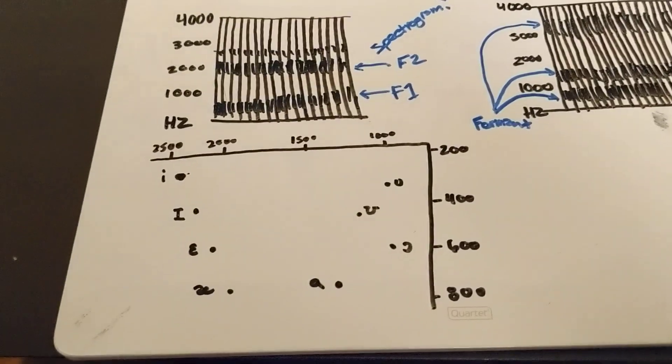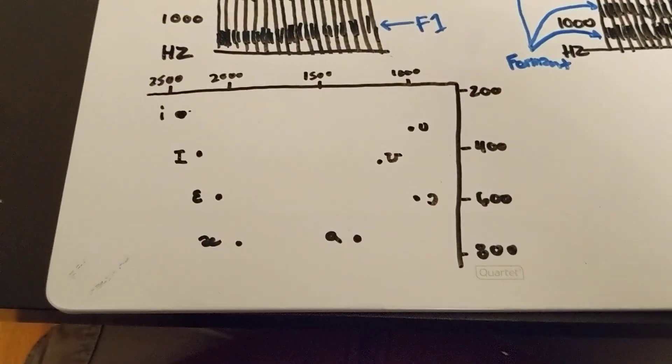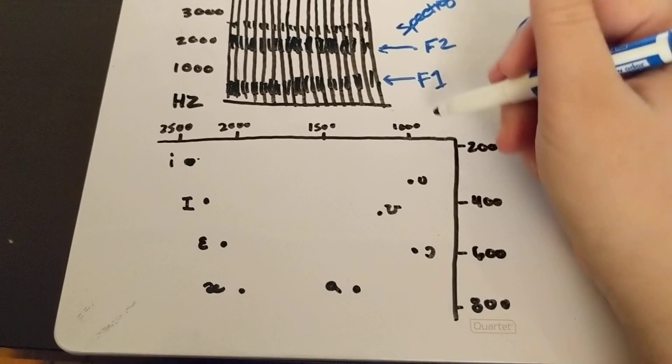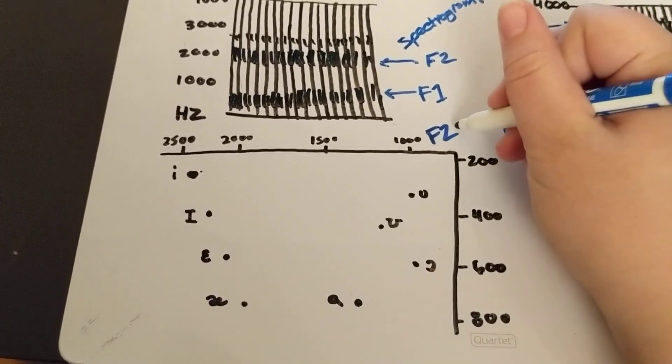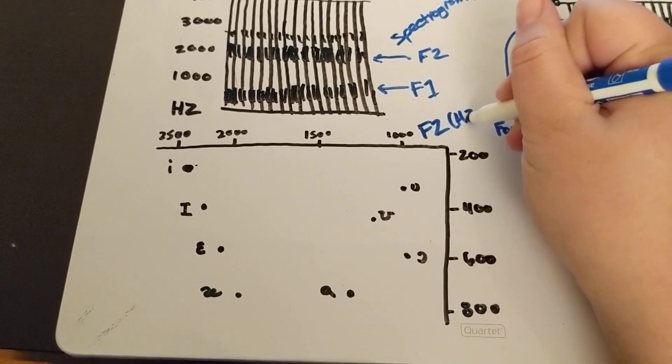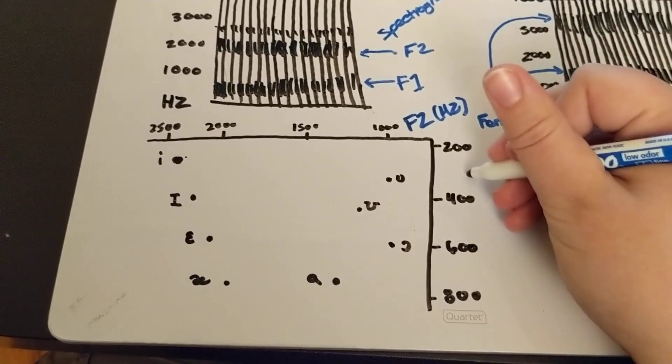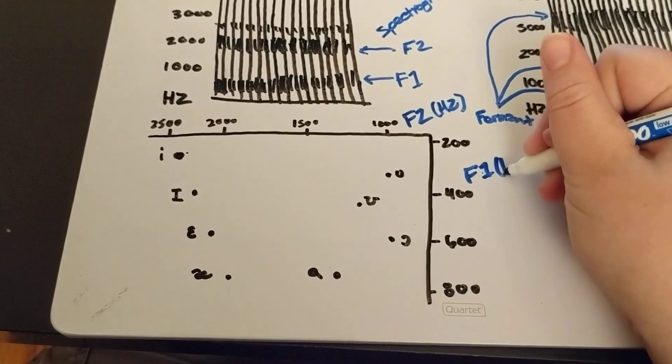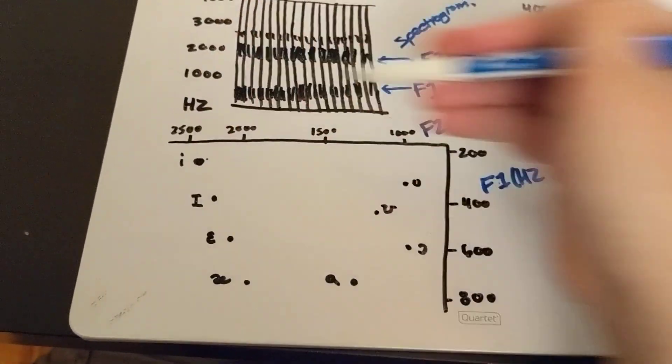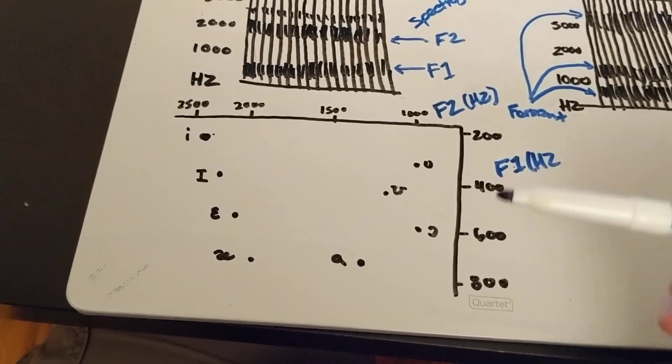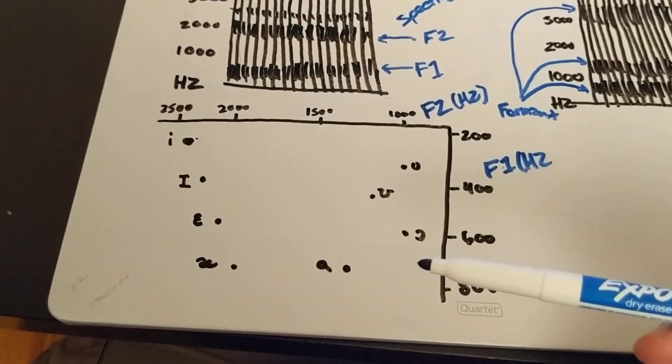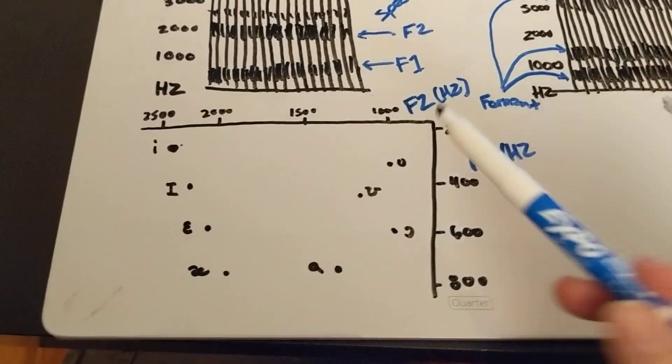Now, interestingly enough, if we plot this on a chart. So over here, we have F2 frequency in hertz. And over here, we have F1 frequency. Now, we have to do this a little bit upside down to how we would do a normal graph, right? But what does this look like? This looks exactly like our IPA vowel table. This is pretty cool, right?